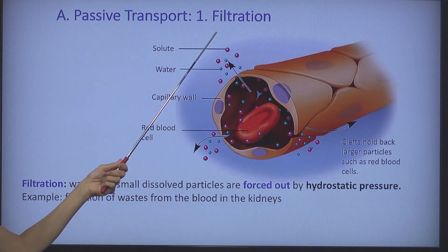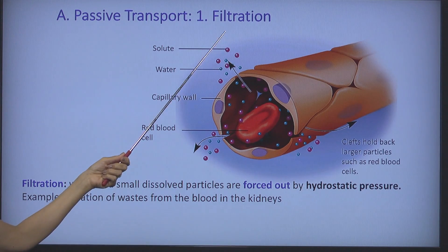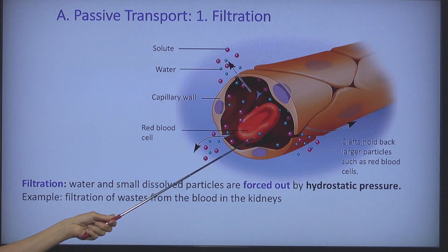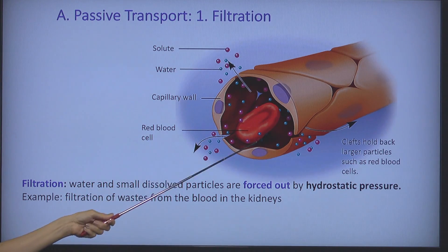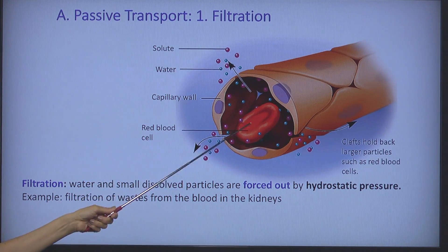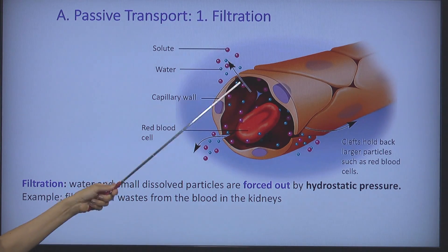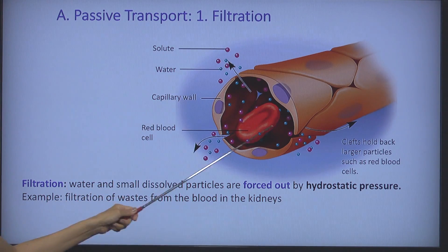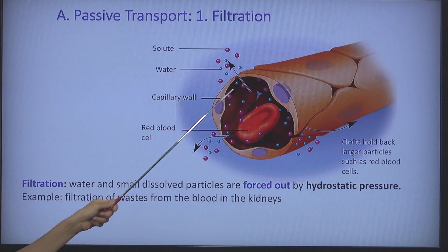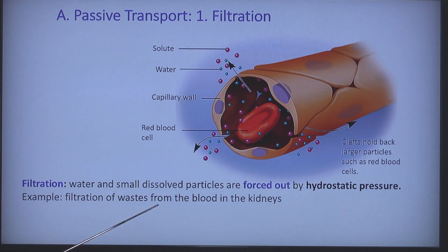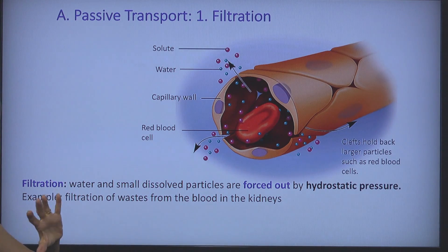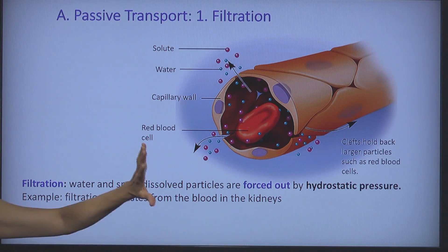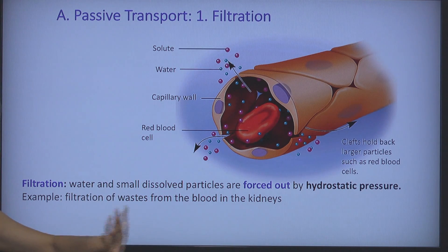The first passive transport mechanism is filtration. In filtration, water in a certain area carries some dissolved solutes and forces them out. We can see this happens very often in the kidney, where we are trying to take substances out of the blood and filter them to the kidney. These are waste products that we want to get rid of.